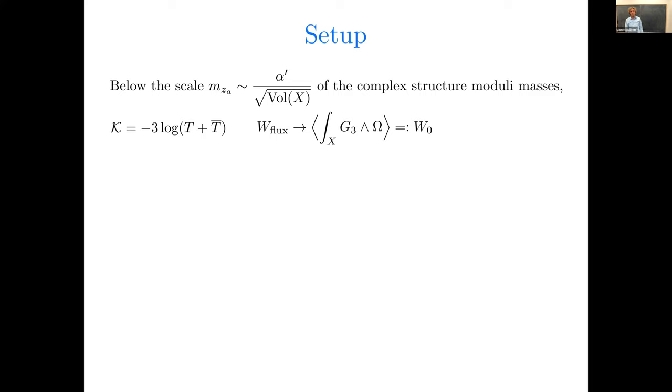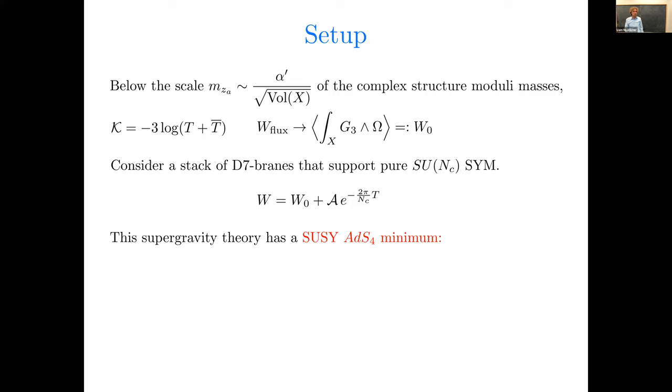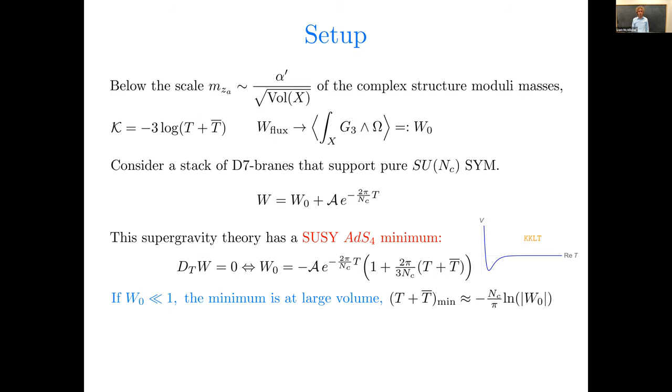Now for generic choices of quantized fluxes, the solutions of the f-flatness conditions for the axio-dilaton and the complex structure moduli are isolated, and so those moduli are fixed with a sizable mass. And below the scale of the complex structure moduli masses, the only fields in the effective theory are the Kähler moduli. Let's suppose for the purpose of illustration that there's just one, although we'll treat the exact case of multiple in the remainder of the talk. And then the flux superpotential can just be evaluated on the vacuum configuration of the complex structure moduli, and it's a number, some complex number w0.